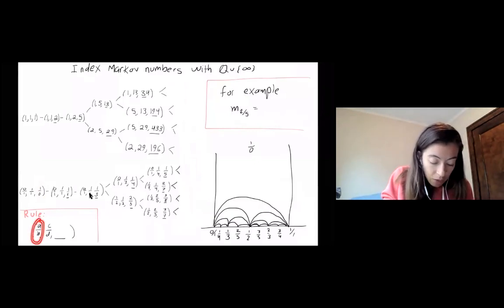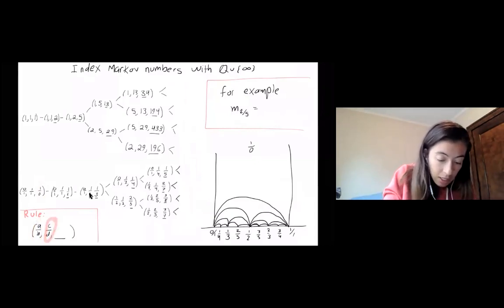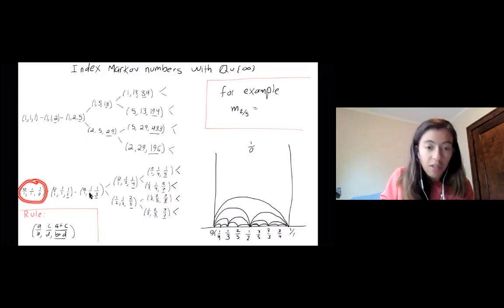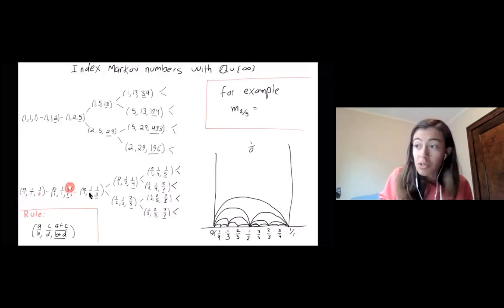is if you have A over B and C over D, they can connect to another rational number, which is A plus C over B plus D. So for example, okay, so we pick somewhere to start. So we're going to start at zero, one and infinity, and then we get rid of infinity first because it's awkward. So then we link to having zero plus one, that's one over one plus one, that's two.